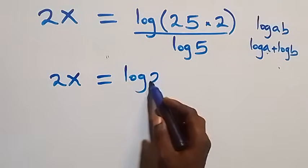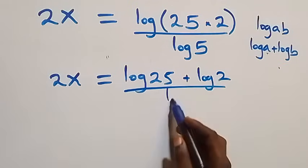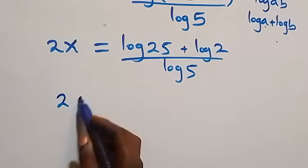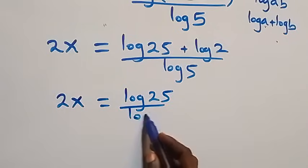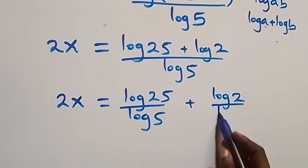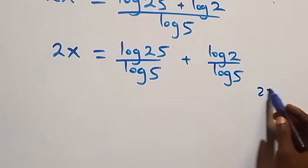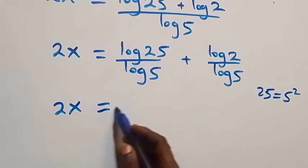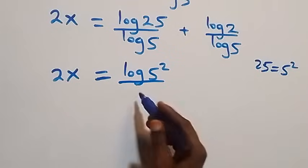Then we separate this into two fractions, so 2x equals log 25 over log 5, plus log 2 over log 5. We can then express 25 as 5 times 5, which is 5 squared, and what we have becomes 2x equals log 5 squared over log 5, plus log 2 over log 5.